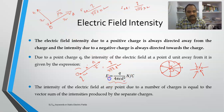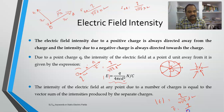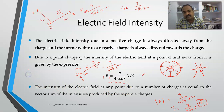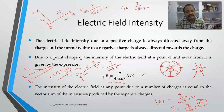Electric field intensity also applies the superposition theorem. If there are three charges Q1, Q2, Q3, and I want to find the electric field at a point, then if E1, E2, and E3 are the individual fields due to each charge, the total E = E1 + E2 + E3. Electric field intensity satisfies the superposition theorem.